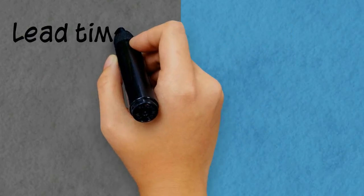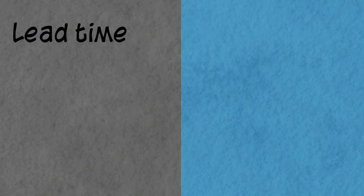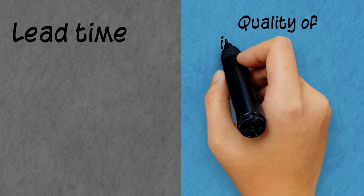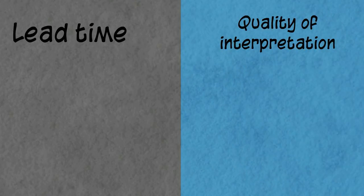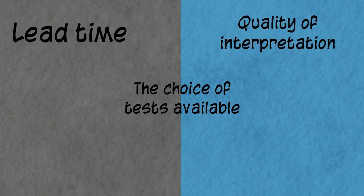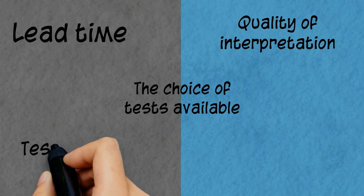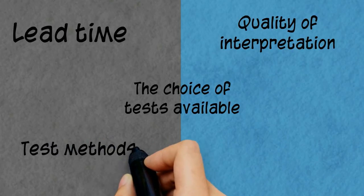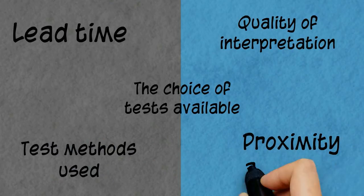The main criteria for choosing a lab are: 1) lead time — ideally 24 to 48 hours after receipt of the sample; 2) quality of interpretation — clarity and level of detail in the reports; 3) the choice of tests available and flexibility; 4) test methods used; and 5) proximity and price.